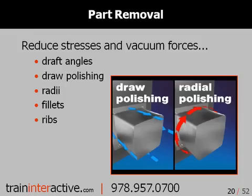Fillets and corner radii will also reduce the forces as well as increase the part strength during ejection. Be sure to draw polish the core in the direction of ejection, as this reduces the surface friction. Ribs and gussets are an excellent way to strengthen the part, allowing it to better withstand the forces of ejection.